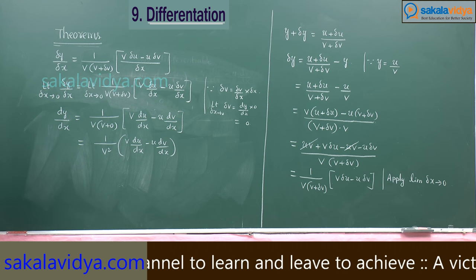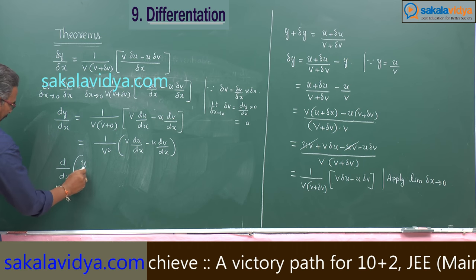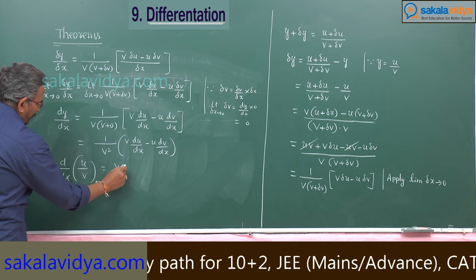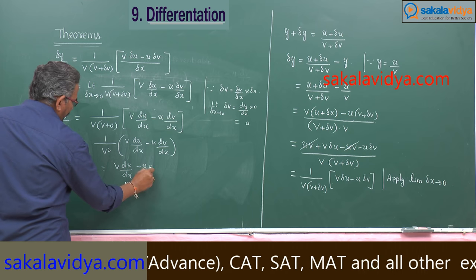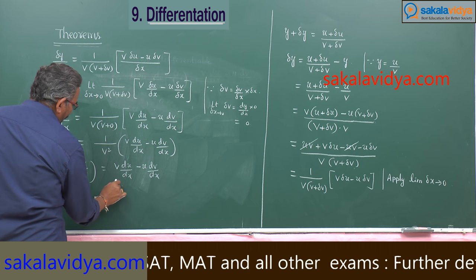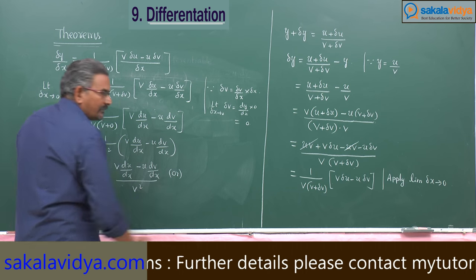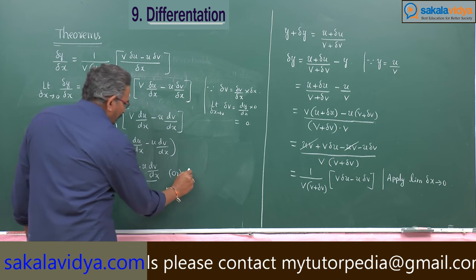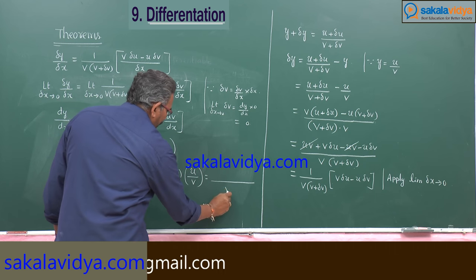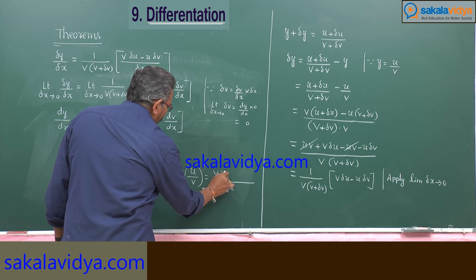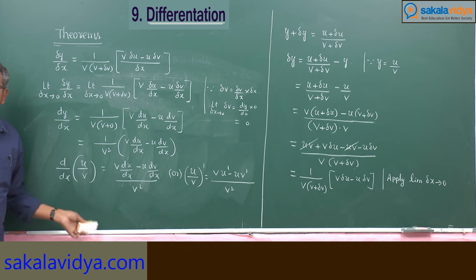Now, since y is nothing but u by v, d/dx of (u/v) is equal to v*(du/dx) minus u*(dv/dx), all over v squared. Or, this we can remember as: (u/v)' equals (v*u' minus u*v') divided by v squared. This is known as the Quotient Rule.